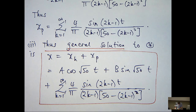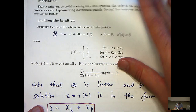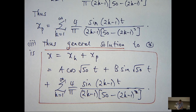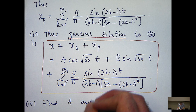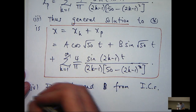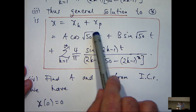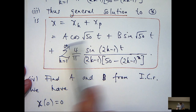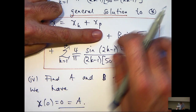We haven't yet used our initial conditions. The spring-mass system started from rest with zero displacement, so let's use these initial conditions to calculate A and B. The first initial condition is x of zero equals zero. Substituting t equals zero into the general solution: this term gives A, this term gives zero, and the series term is also zero. So A equals zero, and the cosine term disappears — we're left with only sines.